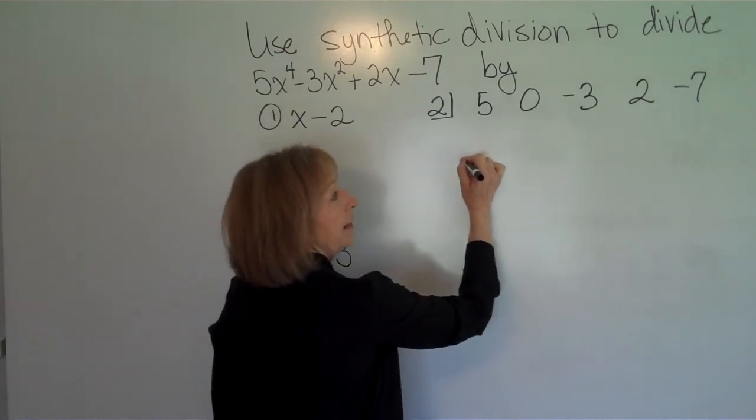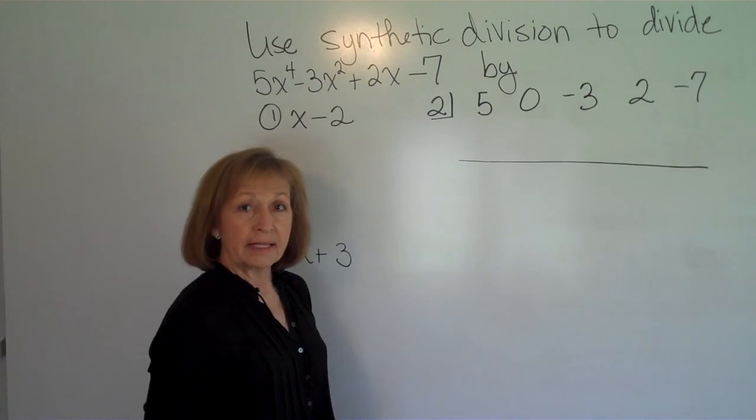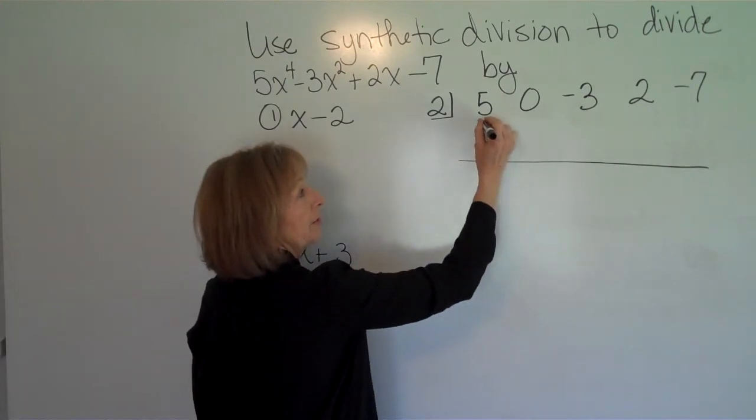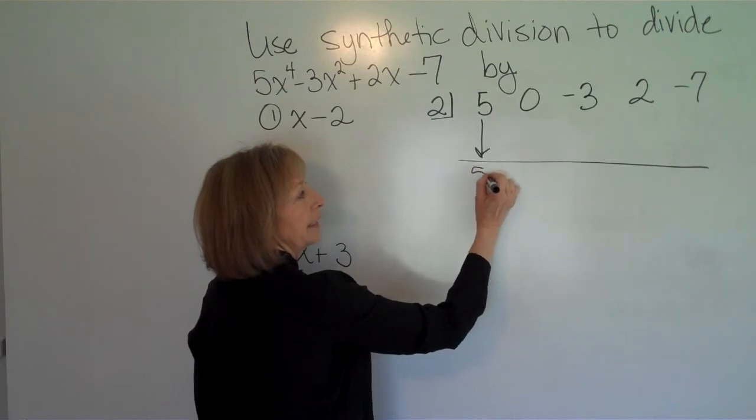Now go down, skip a line, and then draw a horizontal bar. This is how synthetic division goes. You bring the first number down without doing anything to it.